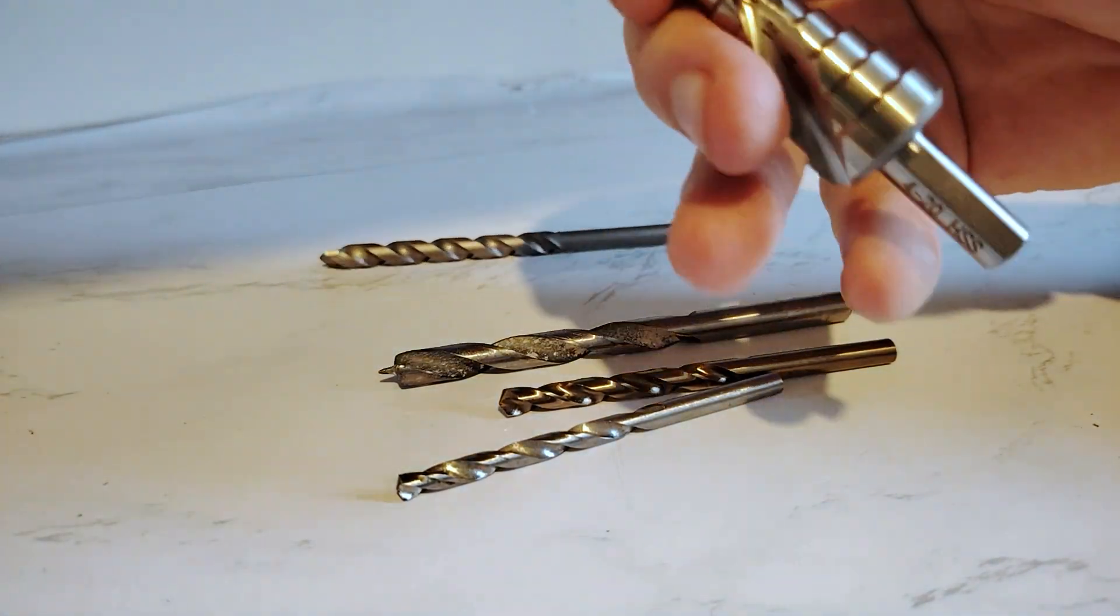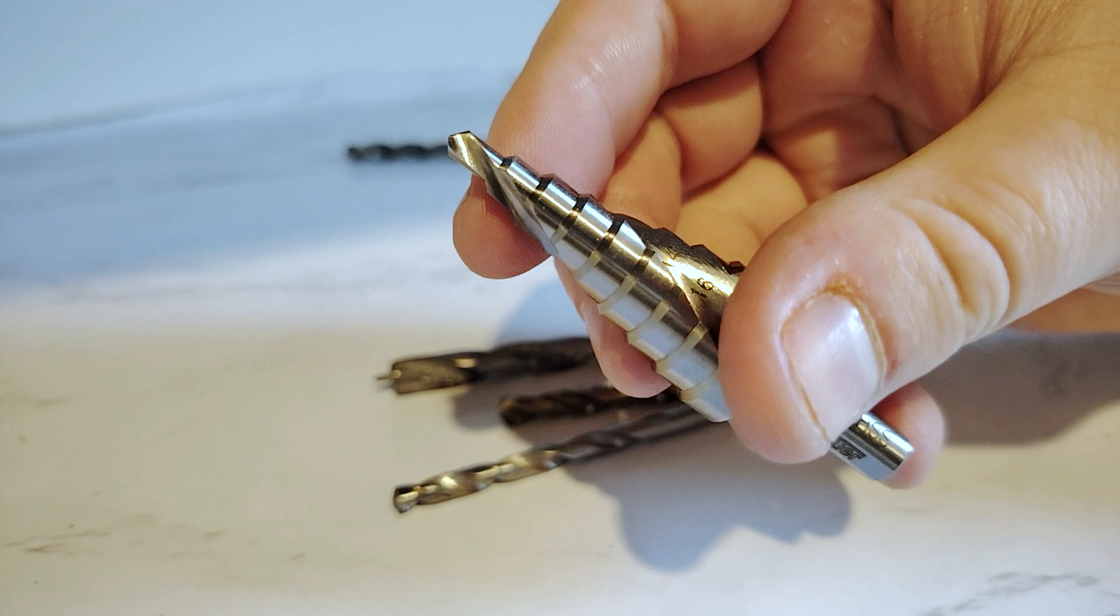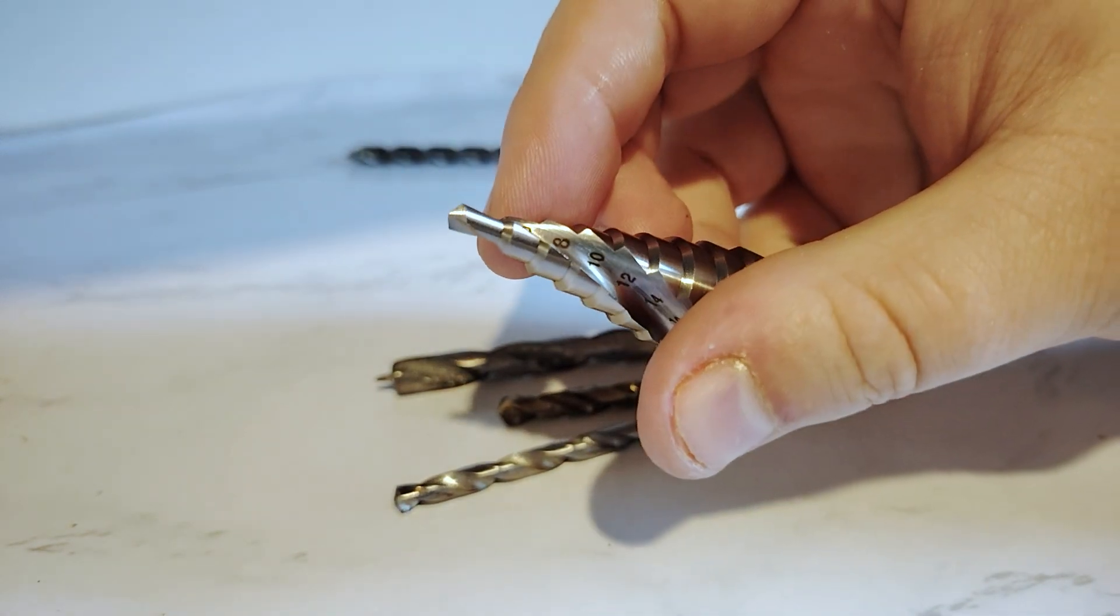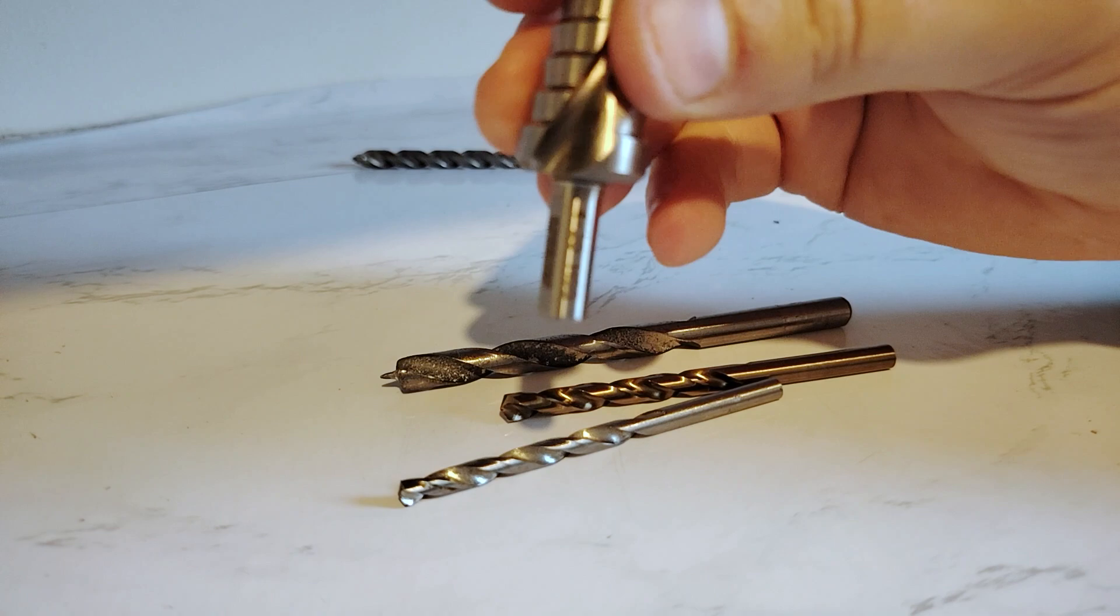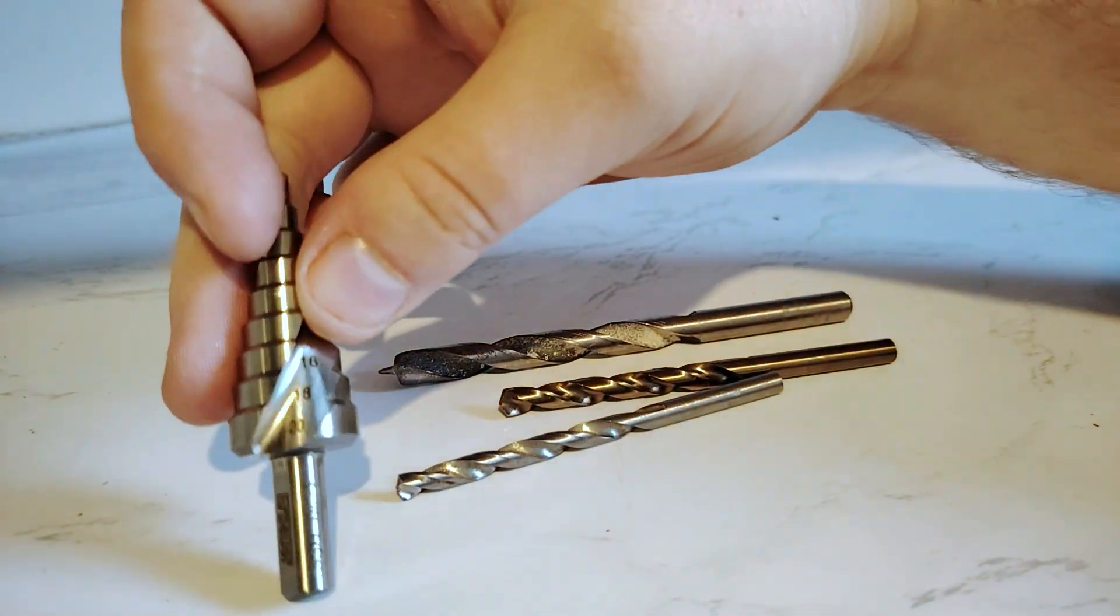And then also just to round it off, this is called a step drill bit and this can also be used for cutting metal. So you've either got a step drill bit, which is pretty unlikely you'll have unless you got it specially for something.